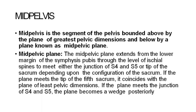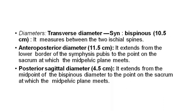Mid pelvis is the segment of the pelvis bounded above by the plane of greatest pelvic dimensions and below by the mid-pelvic plane. The mid-pelvic plane extends from the lower margin of the symphysis pubis to the level of the ischial spines, to meet either the junction of S4 and S5 or the tip of the sacrum depending upon the configuration of the sacrum. If the plane meets the tip of the fifth sacrum, it coincides with the plane of least pelvic dimensions. Diameters: Transverse (bispinous) 10.5 cm — between the two ischial spines; posterior diameter extends from the lower border of the symphysis pubis to the point of the sacrum where the mid-pelvic plane meets; posterior lateral diameter extends from the midpoint of the bispinous diameter to that sacral point.